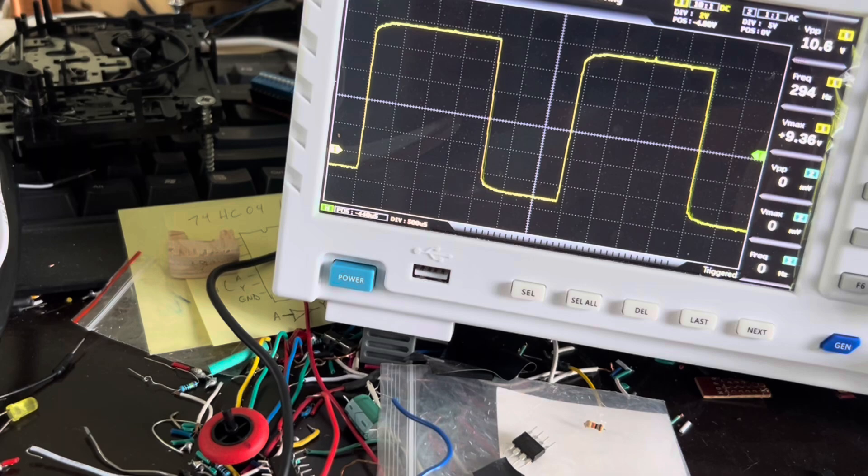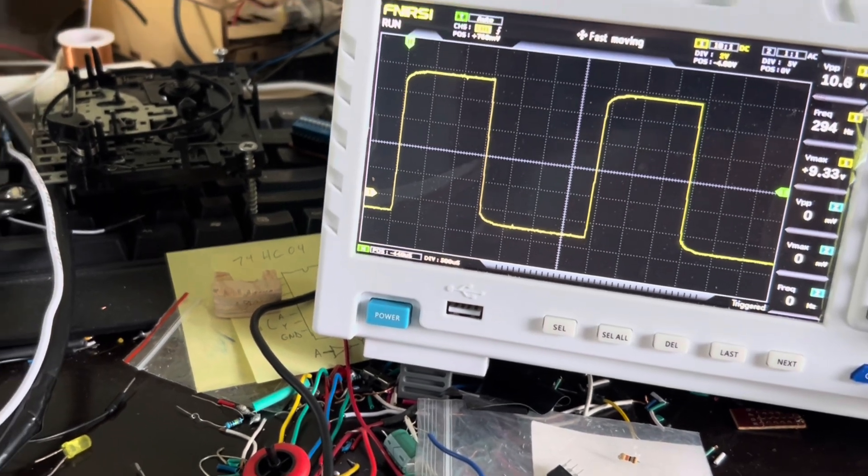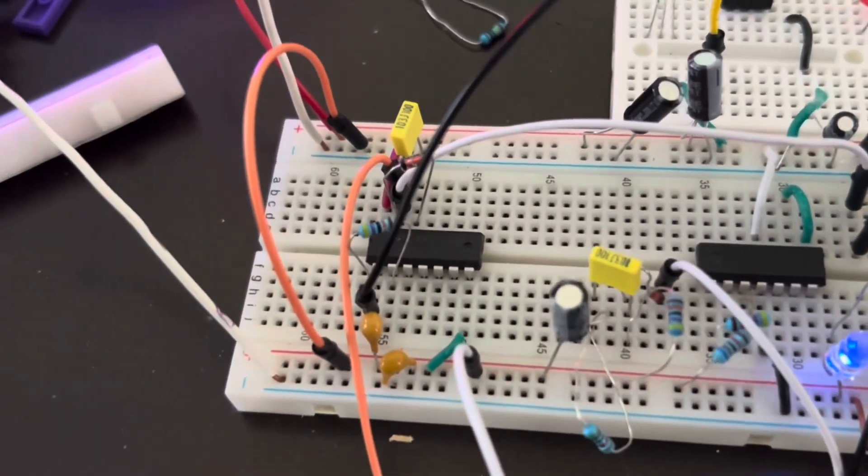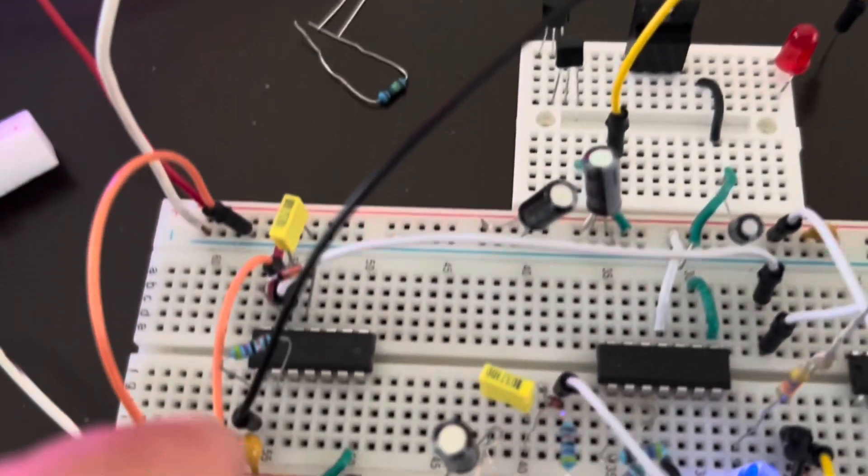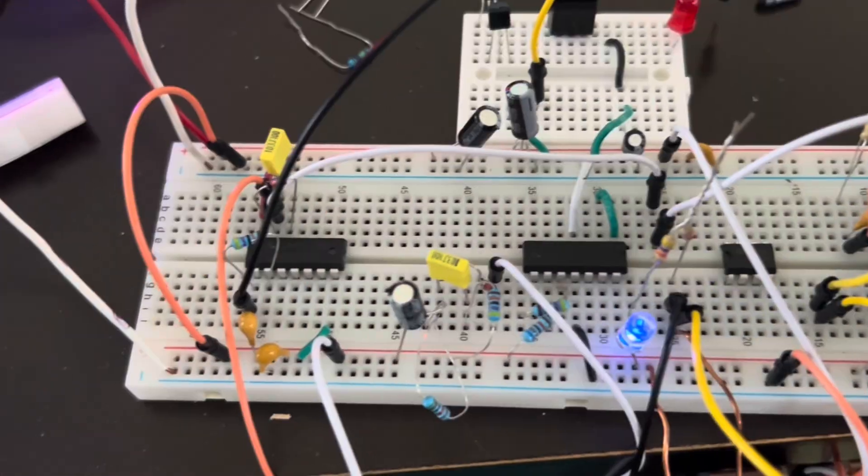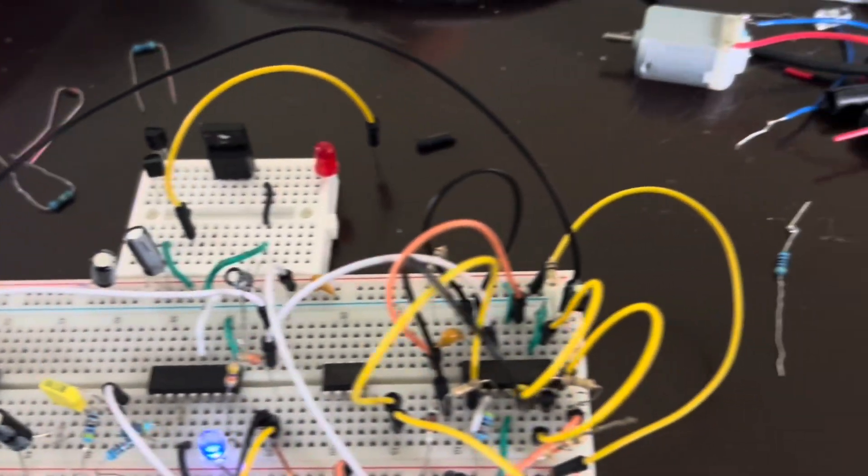Let me change it back to about 50% duty cycle. Now I have this last oscillator here at the bottom. And this is a low frequency oscillator. And I have it making a triangle wave.